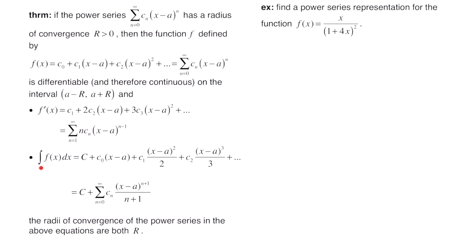We'll also be taking the integral of the functions. Here we have c, our arbitrary constant, plus c0 times the quantity x minus a, plus c sub 1 times x minus a squared divided by 2, plus c sub 2 of x minus a to the third power divided by 3, and so on. We'll do term by term integration or take the function in sigma notation and integrate it, where we add 1 to our exponent and divide by that new exponent n plus 1. The radii of convergence of the power series in the above equations are both going to be r.